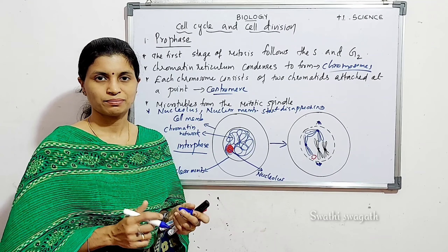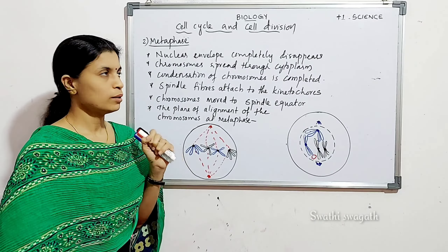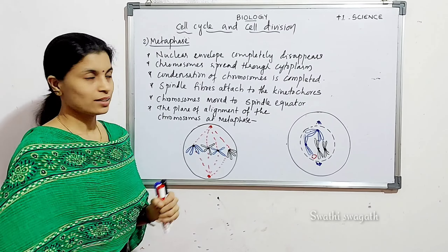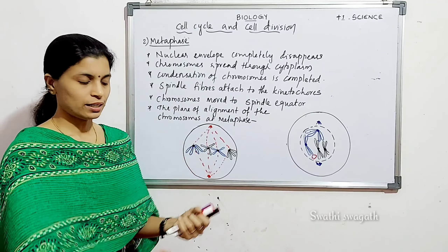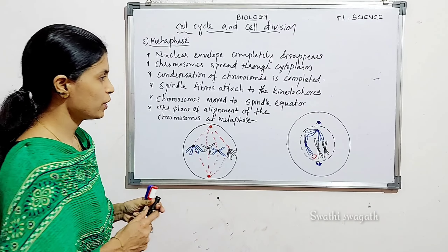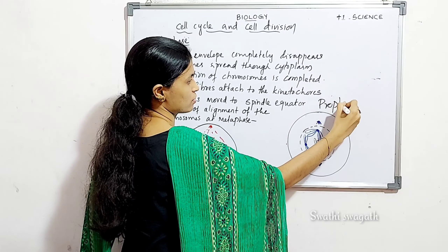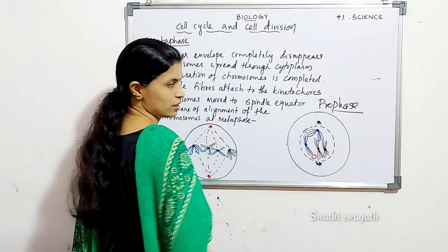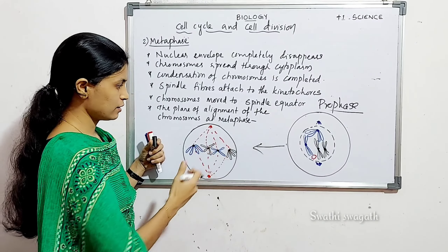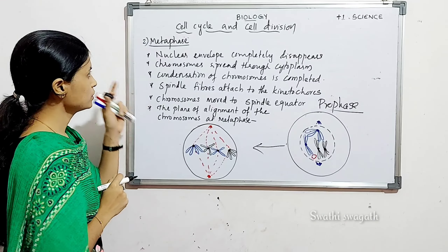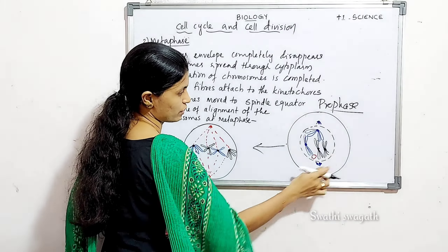The second stage of mitosis is metaphase. In metaphase, the nuclear envelope completely disappears. Comparing the diagram of prophase and metaphase, we can see these changes clearly. Once the nuclear envelope disappears, the chromosomes spread through the cytoplasm.